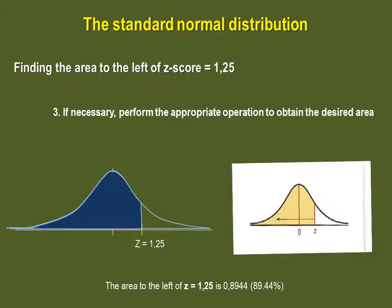The third step is to verify that what the table gives us as a value fits what we're actually looking for. In this case, we were looking for the area to the left, and this is what the table offers. So we do not have anything else to do, except to state that the area to the left of the Z-score of 1.25 is 0.8944, or 89.44%.